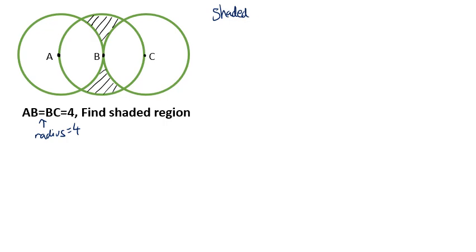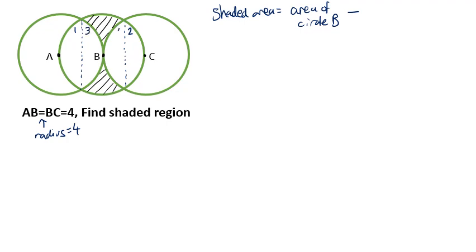The shaded area is just the area of circle B minus... if I draw some dashed lines down here, we've got segments one and two here — these are segments of circle B. A segment is a shape formed if you draw a chord across a circle. We've also got the bits I'm labelling three and four — they're also segments of circle A and circle C. By symmetry, all of these are the same, so it's just the area of circle B minus four segments.